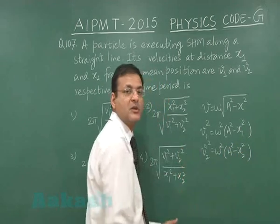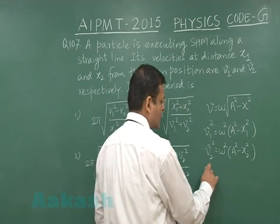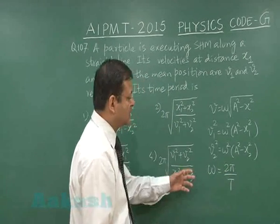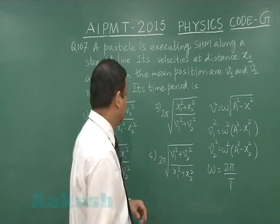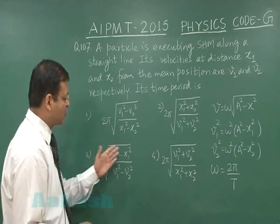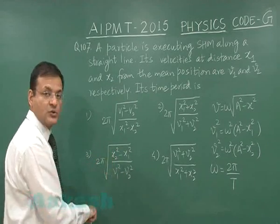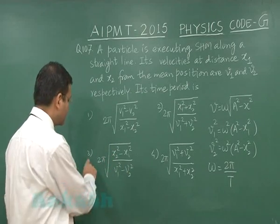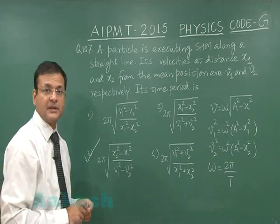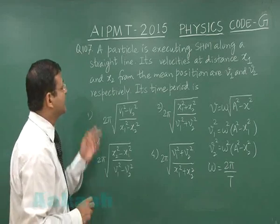Subtracting the two equations and substituting ω = 2π/T gives an expression for the time period: T = 2π√[(x₂² − x₁²)/(v₁² − v₂²)] or equivalently with x₁² − x₂² over v₂² − v₁². The standard expression corresponds to option 3, which is the answer to question 107.